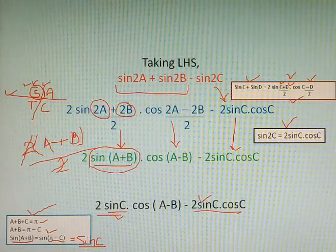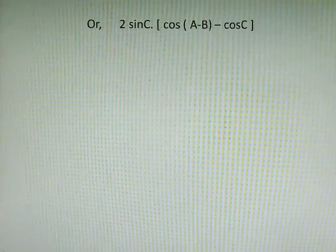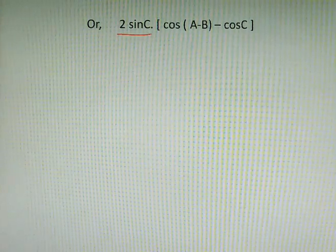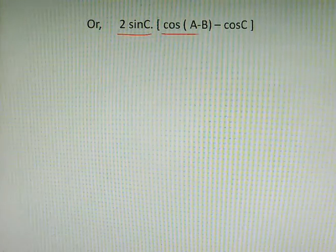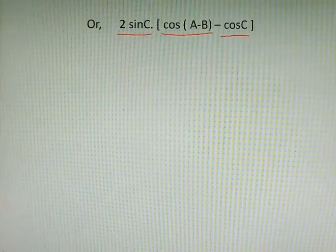From these two parts we will take 2sinC common and then move to the next step. 2sinC comes common and cos(A-B) - cosC will be the remaining factors in the previous step.